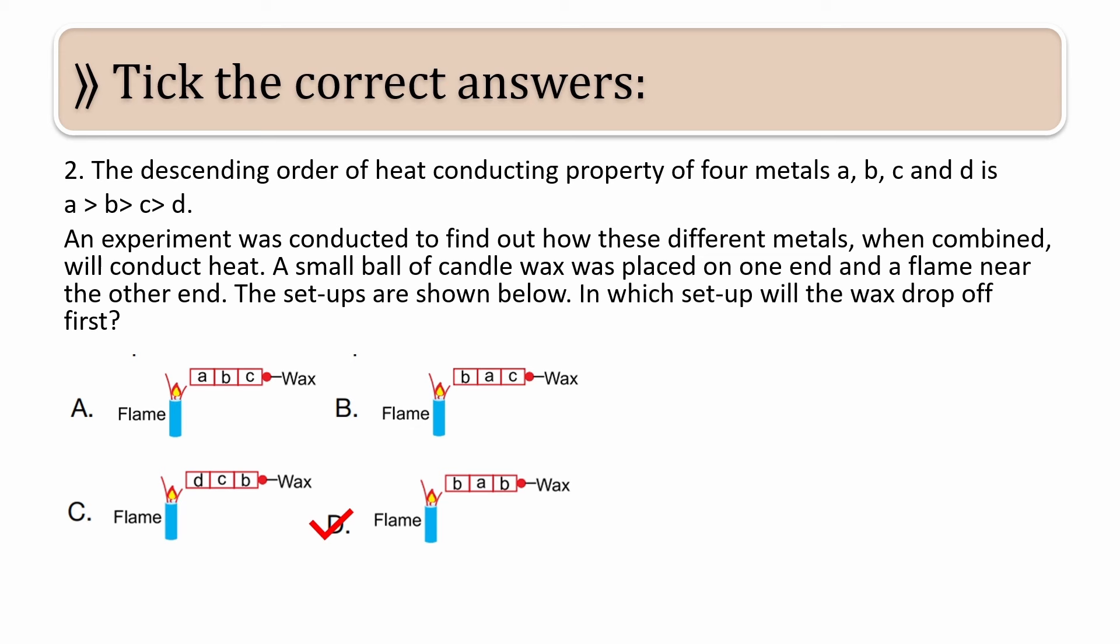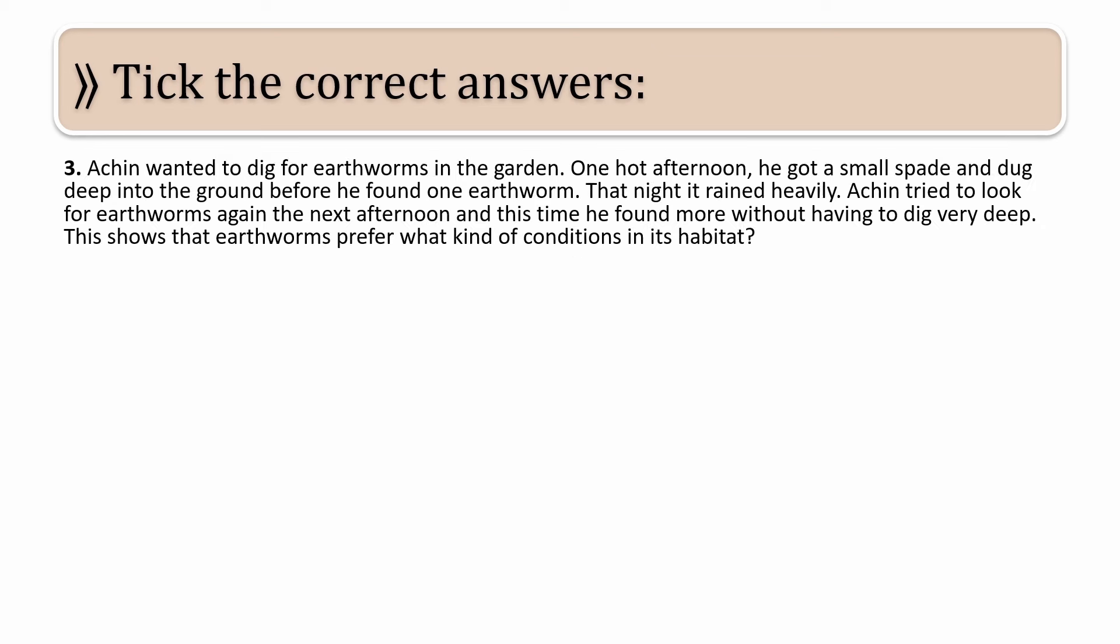I will repeat once more. Options A, B, and C include metals like C and D, which have the lowest heat conducting property. Whereas it is only option D where it has good conducting materials. That's why D option is correct. Let us see the next question.